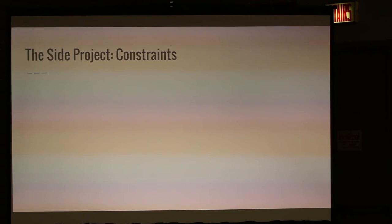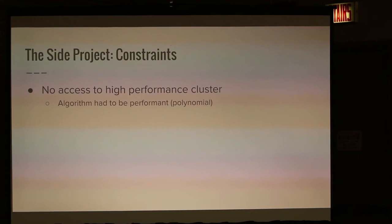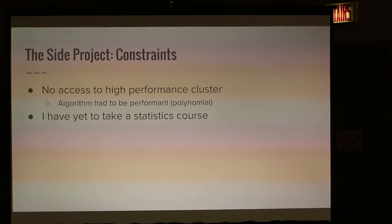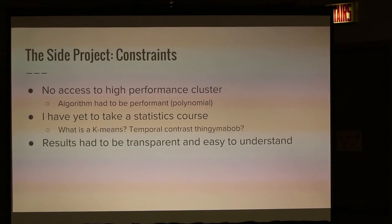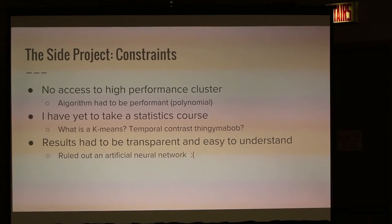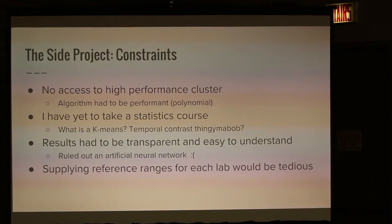I want to start with the constraints of this side project because that guided the method I chose. First, I didn't have access to a high-performance cluster or supercomputing. So the algorithm had to be performant. I have yet to take a statistics course, so I don't know how to do those things. The results had to be transparent and easy to understand — that ruled out an artificial neural network, which I really wanted to do. And supplying reference ranges for each lab value would be tedious, with a lot of data sanitization and filling in missing values.